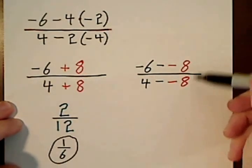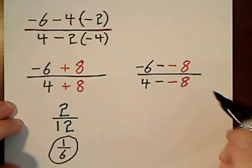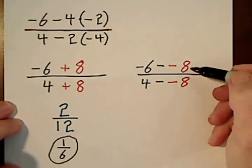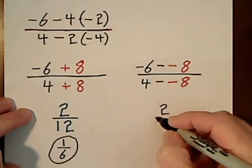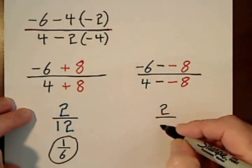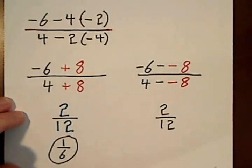From here, I don't know how you like to proceed. I don't go down this road, so I'm not going to advocate going that way. But from here to the next step, you would still get a positive 2 and a 12. And obviously, 2 twelfths would reduce to 1 sixth.